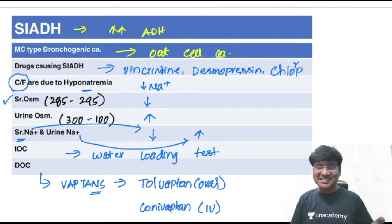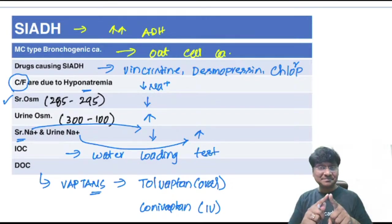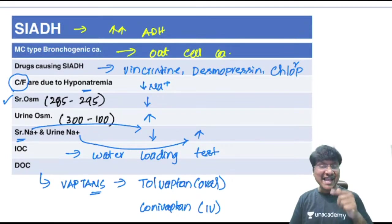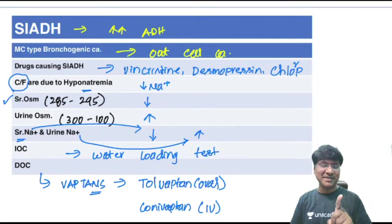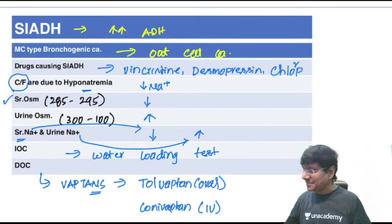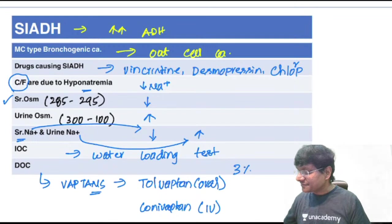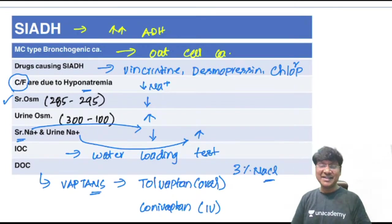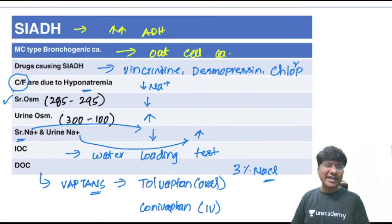Other treatment measures in SIADH: water intake should be reduced. If the patient has symptomatic hyponatremia, you should also give 3% sodium chloride. Most common bronchogenic carcinoma causing SIADH is small cell carcinoma.